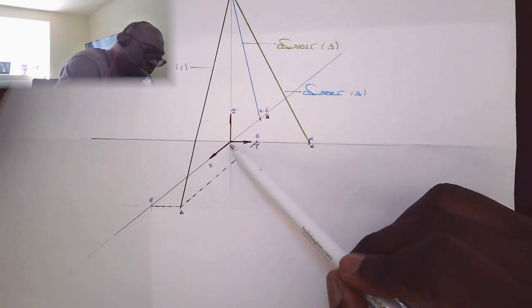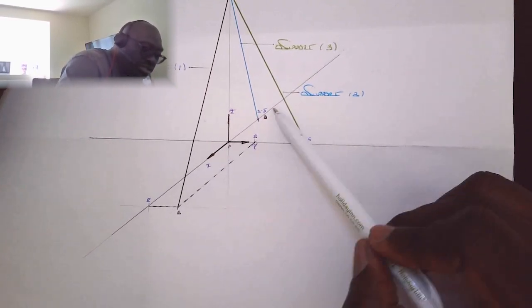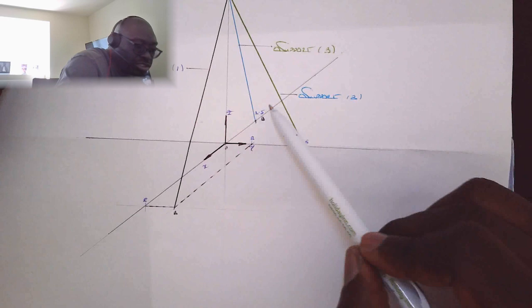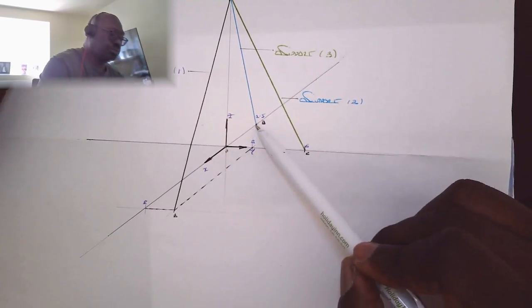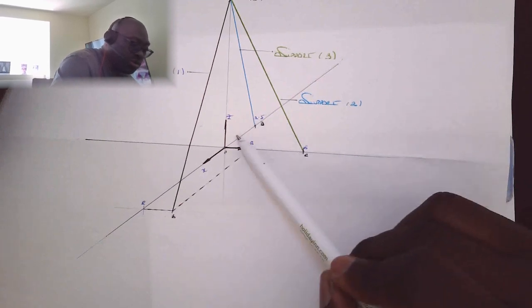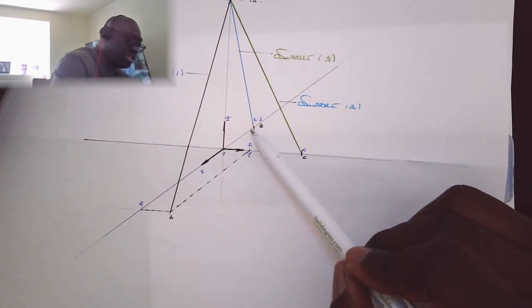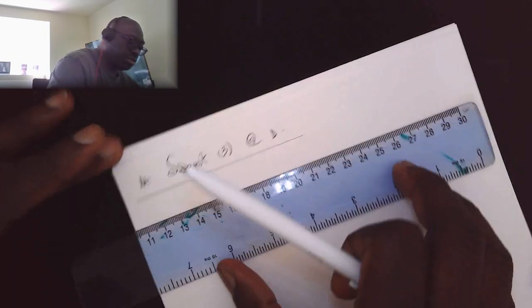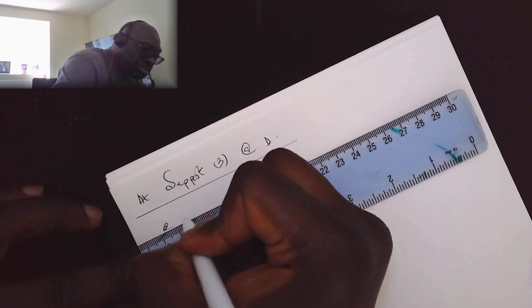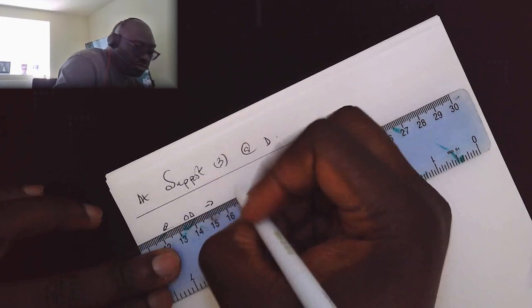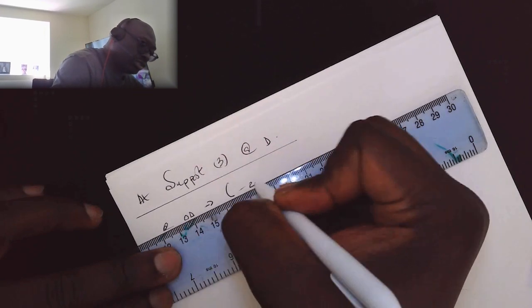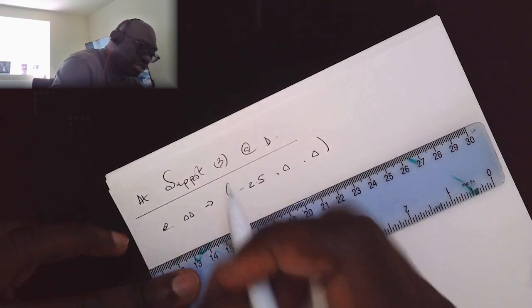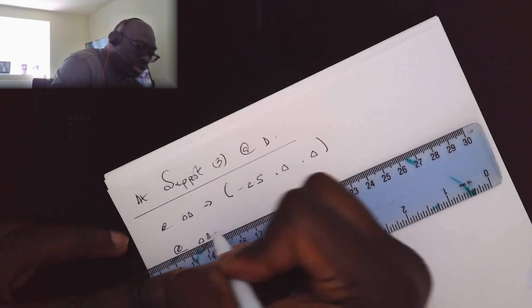So at OD, this is what we have. We've basically got minus two point five, zero, zero. And we already know that OA, that's going to give us rho AD. That's equal to OD minus OA.